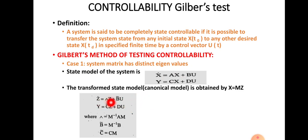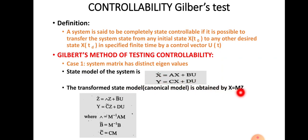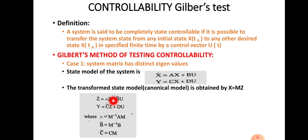In the canonical form, we make x = Mz, where the state variable x is obtained by multiplying the modal matrix M and z. We obtain the canonical model as: z-dot = Λz + B̂u, and output equation y = Ĉz + Du. Here z is the state variable in the canonical model, whereas x is the state variable in the original state model.